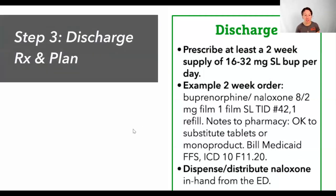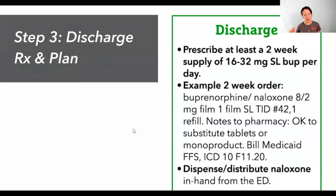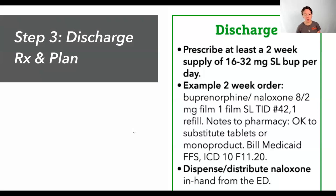The most common discharge prescriptions are somewhere between 16 and 32 milligrams daily, as a once or twice a day dose based on patient preference. If you're in California, sticking the ICD-10 code in the discharge prescription helps signal to the pharmacy what you're treating for — it gets billed through a carve-out in the Medi-Cal system, so patients don't have to pay for it. And of course, we advocate sending patients home with naloxone.